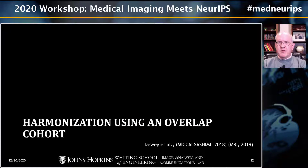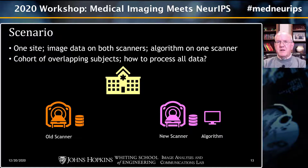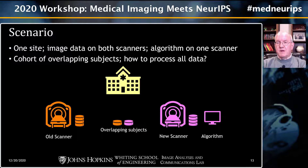The first of three examples is harmonization using an overlapping cohort, reported at MICCAI a few years ago and in a journal paper last year. The scenario is that we have one site with an old scanner and lots of data, potentially developing an algorithm on a new scanner because the data is typically higher quality. In this case we might have a smaller overlapping cohort, but one suitable for training a harmonization technique that can take the old data and make it look more like the new data.